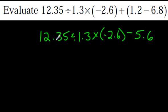12.35 divided by 1.3 times negative 2.6. And remember, it's minus 5.6, because these two ended up in a negative. So, just leave that answer right there. Okay? So, here we have, well, we have no exponents. So, B, E, no exponents. So, now we're on to division and multiplication. So, just do them in the order that you see. 12.35 divided by 1.3.